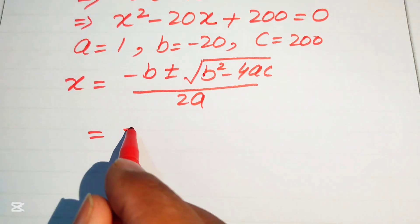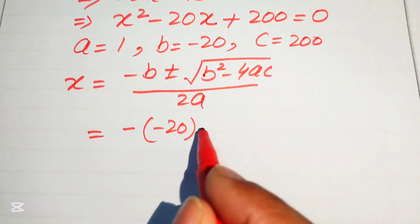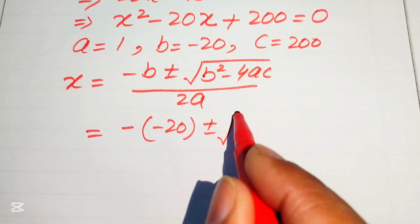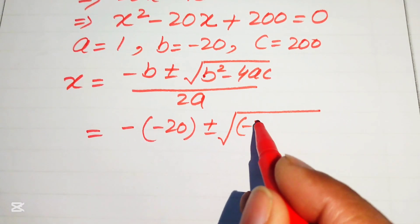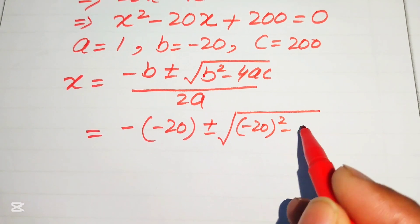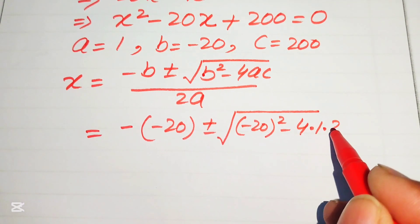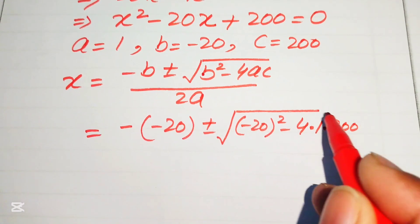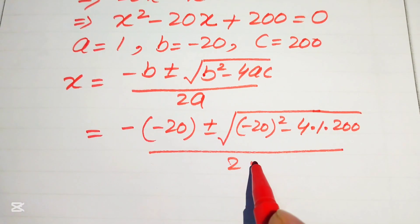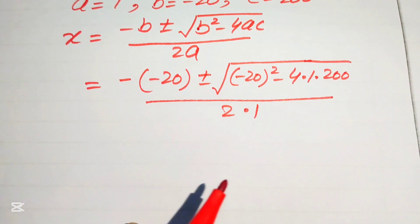Substituting in, we have: the value of b is minus 20, so we write minus 20 plus or minus the square root of b squared — which is minus 20 squared — minus 4 times a, which is 1, times c, which is 200; and it is divided by 2 times a, where a equals 1.